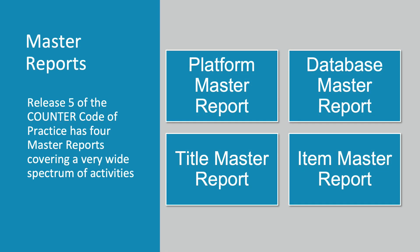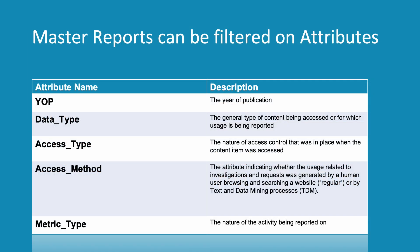Release 5 of the Counter Code of Practice has four master reports: the Platform Master Report, the Database Master Report, the Title Master Report, and the Item Master Report. Master reports can be filtered on attributes, notably Year of Publication (YOP), Data Type, Access Type, Access Method, and Metric Type. Class 1 explained metric types, and Class 4 explains the other attributes.